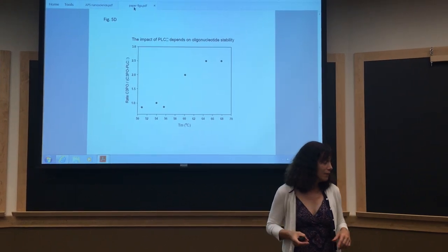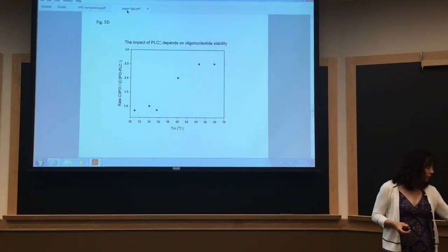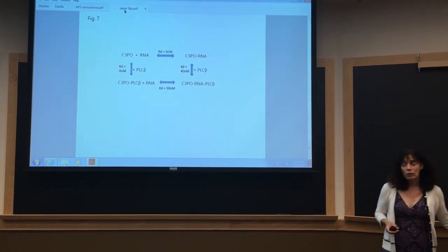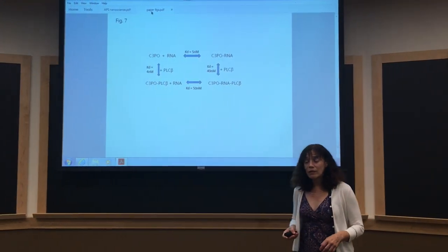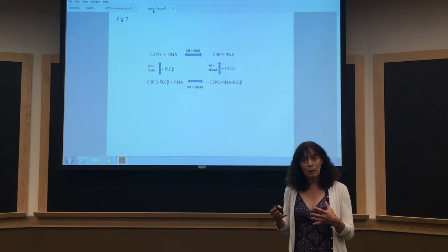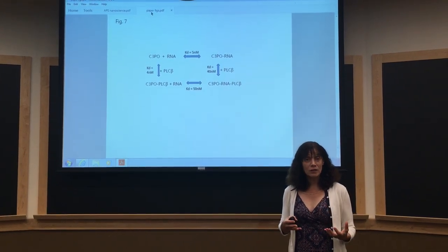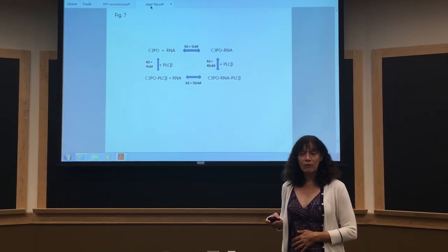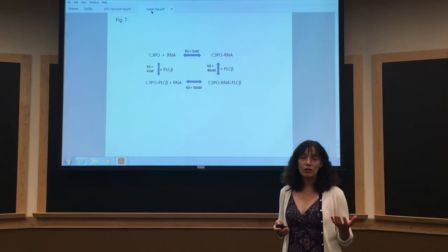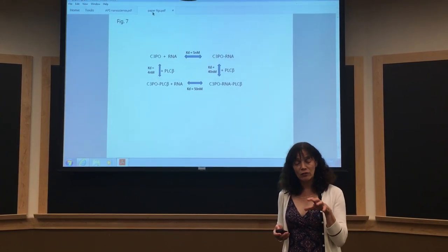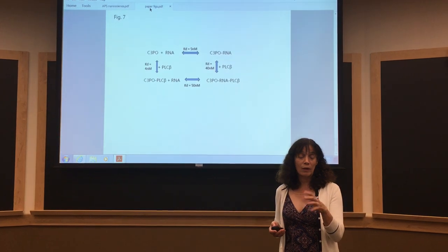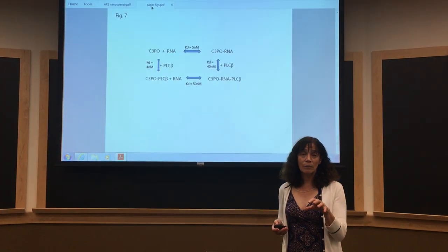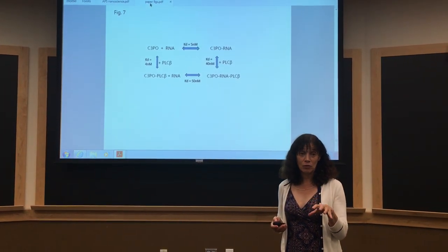So, and then what we also found, we'd observed earlier that only certain genes are affected by PLC binding to C3PO. And here what we found is the genes that are affected are the genes whose microRNAs C3PO hydrolyzes much more slowly.